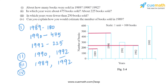The fourth part asks: can you explain how you would estimate the number of books sold in 1989? As we can see, in 1989 the bar is very close to 200, so we have estimated that around 180 books were sold in 1989.